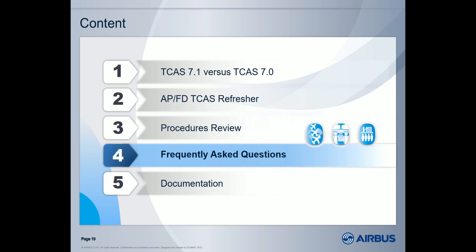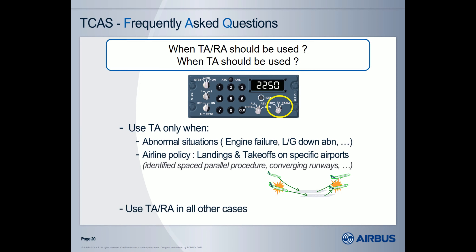Let's now review some frequently asked questions. The first question is: when should we use TA/RA and when should we use TA only? TA only should be used in some abnormal situations, such as engine failure or flight with landing gear down, where aircraft performance is degraded. TA only can also be used upon airline policy at some specific airports where unwanted or inappropriate RAs have been identified — for example, closely spaced parallel runways or converging runways. For all other cases, TA/RA should be used.